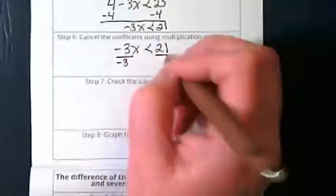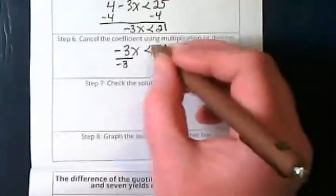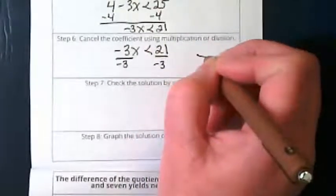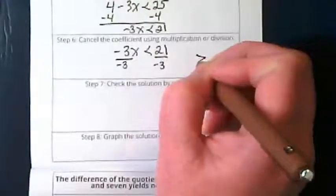Divide by negative 3. What does that mean is happening to our symbol? It is going to go from less than to greater than.